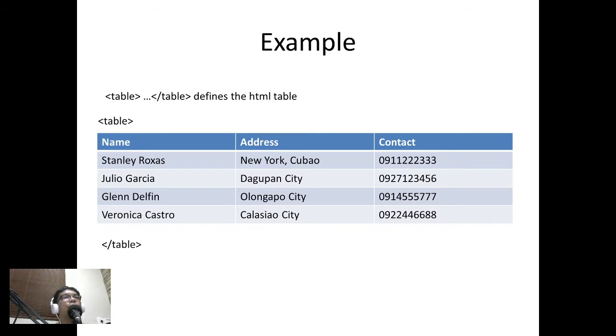So here is an example. For example, we want to give the HTML code of this table. So what we are going to do is define the table first by placing the table slash table tag. So the table tag should be placed before the table and then its closing table tag will be after the table. So this will contain the table.